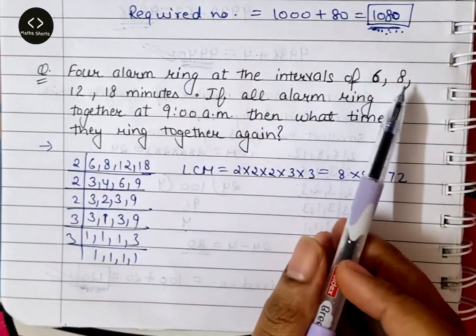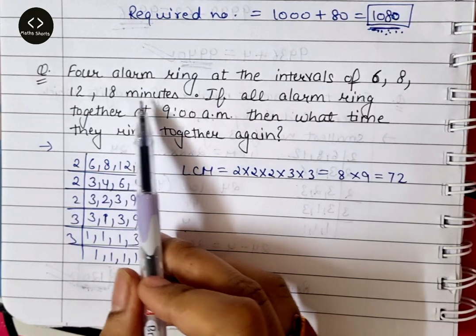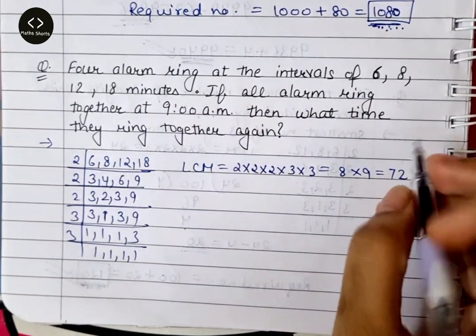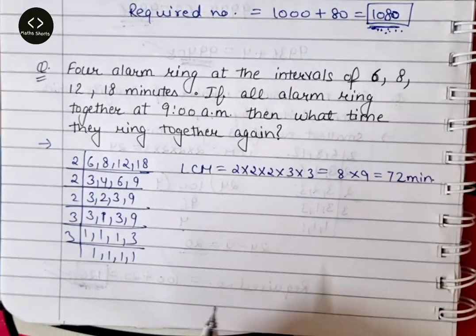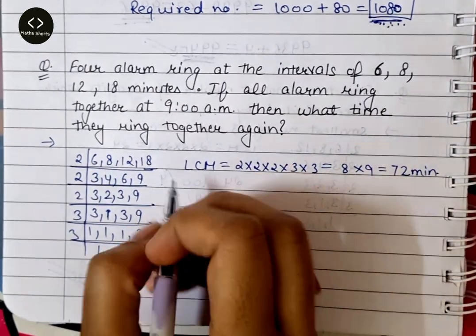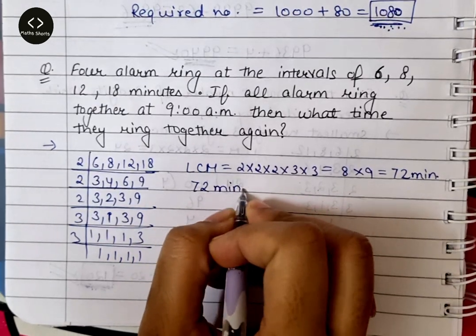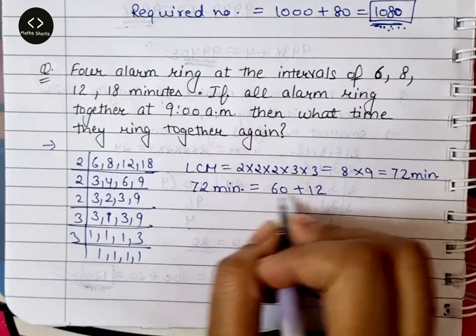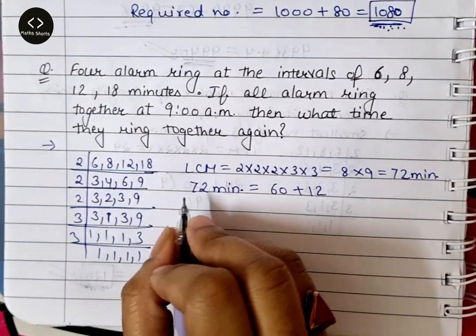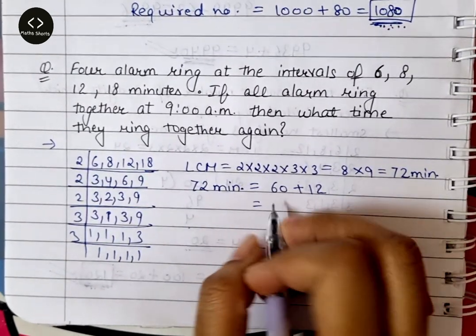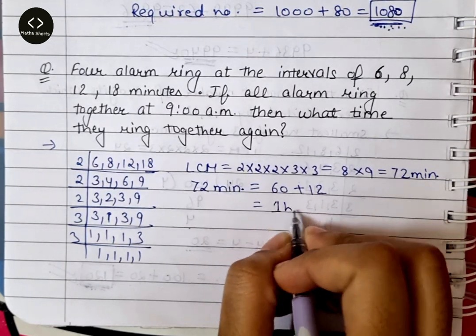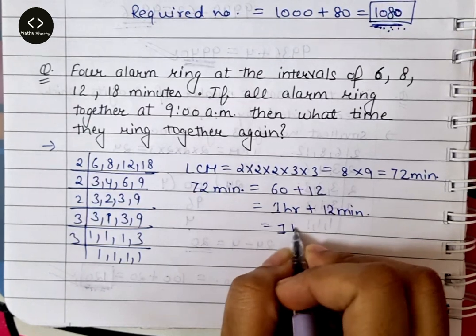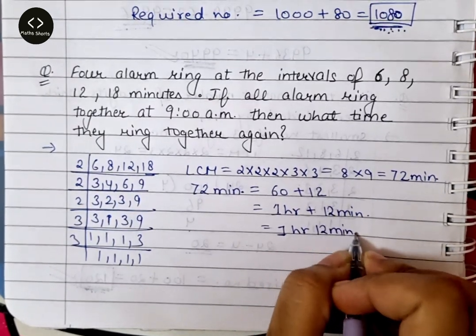Ring at the intervals of 6, 8, 12 and 18 minutes — minutes में दिया हुआ है, तो यह LCM भी minutes में आया। 72 minutes को hours में लिखें तो: 60 minutes + 12 minutes = 1 hour 12 minutes।